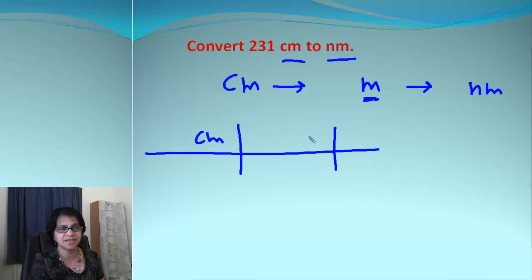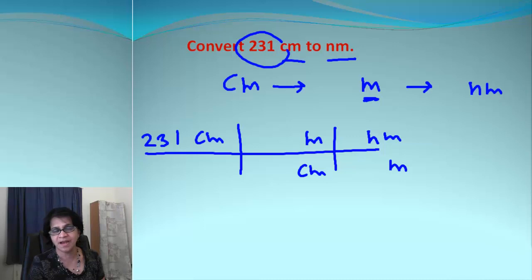So we have centimeter, then we have meter, and we get nanometer. After that, we are going to put criss cross centimeter here and criss cross meters here. We begin with the given value. So that's 231. And if you look at the table, it will tell you one centimeter and it will be equals that value for meters. One nanometer and it will be that value over here.